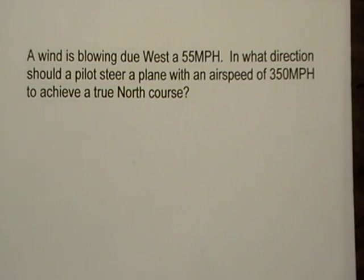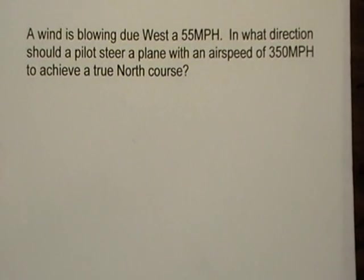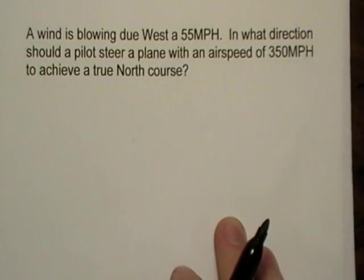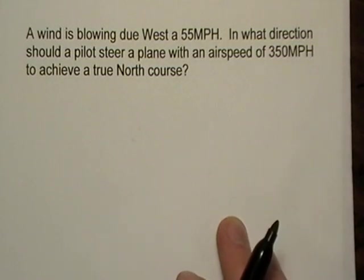Here's a vector word problem, and this is a classic. It says a wind is blowing west at 55 miles an hour. And what direction should a pilot steer a plane with an airspeed of 350 miles an hour to achieve a true north course?